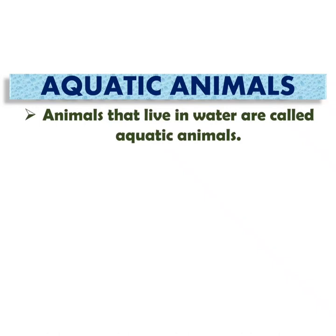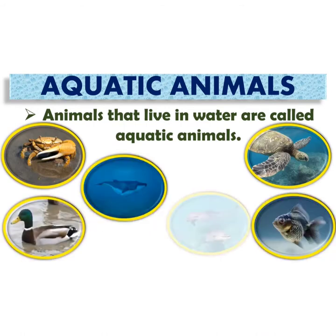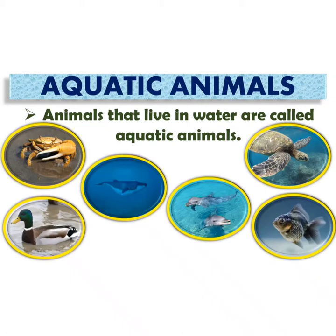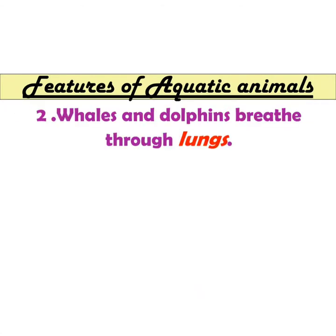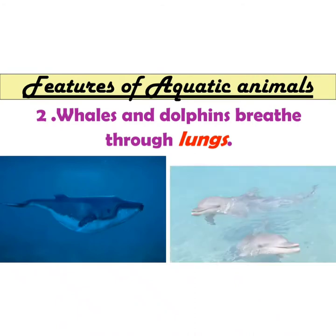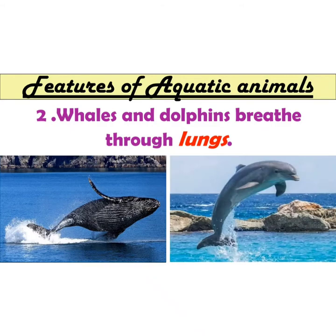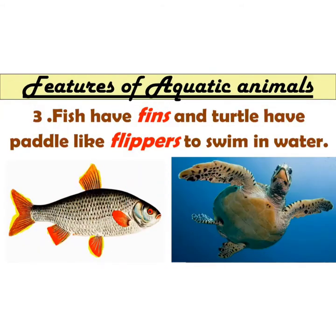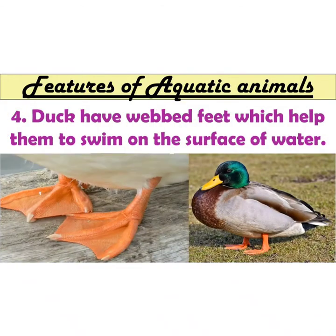Aquatic animals: animals that live in water are called aquatic animals. Crabs, turtle, ducks, fishes, whales, and dolphins are some examples of aquatic animals. Fishes and crabs have gills to breathe in oxygen dissolved in water. Whales and dolphins do not have gills — they have lungs to breathe and come up to the surface of water from time to time. Fish have fins and turtles have paddle-like flippers to swim in water. Ducks have webbed feet which help them to swim on the surface of water.